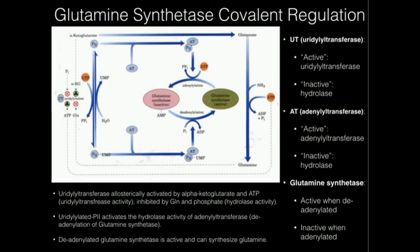The main things to remember: what stimulates glutamine synthetase? Activated uridylyltransferase uridylylates P2, causing adenylyl transferase to act as a hydrolase — deadenylation favors active glutamine synthetase. What turns off glutamine synthetase? Inactive uridylyltransferase, leaving P2 deuridylylated, so adenylyl transferase adenylates glutamine synthetase, rendering it inactive. That is the covalent regulation of glutamine synthetase, which results from allosteric regulation of the uridylyltransferase. In the next video, we'll cover the allosteric regulation of glutamine synthetase directly.